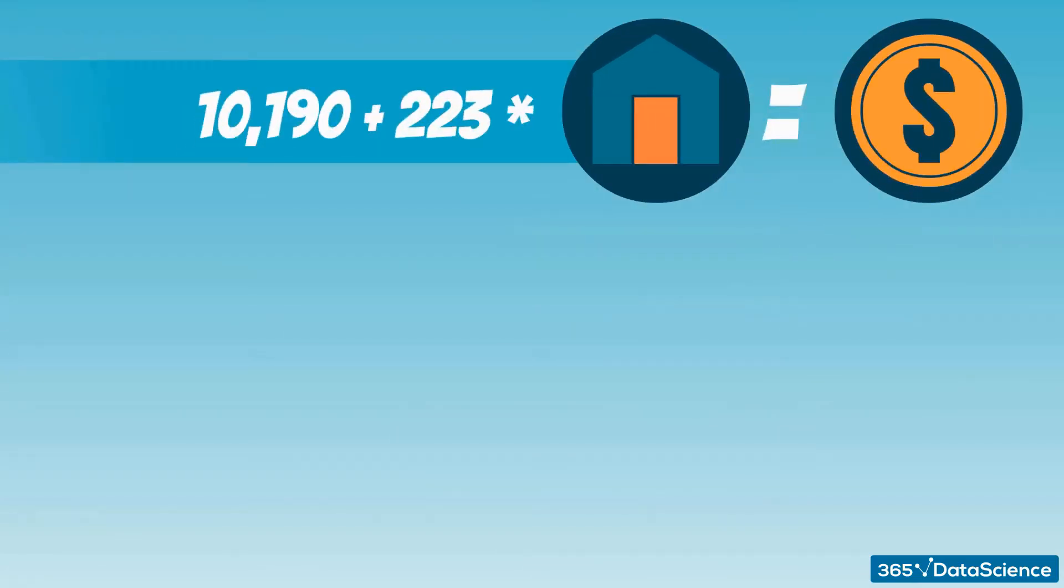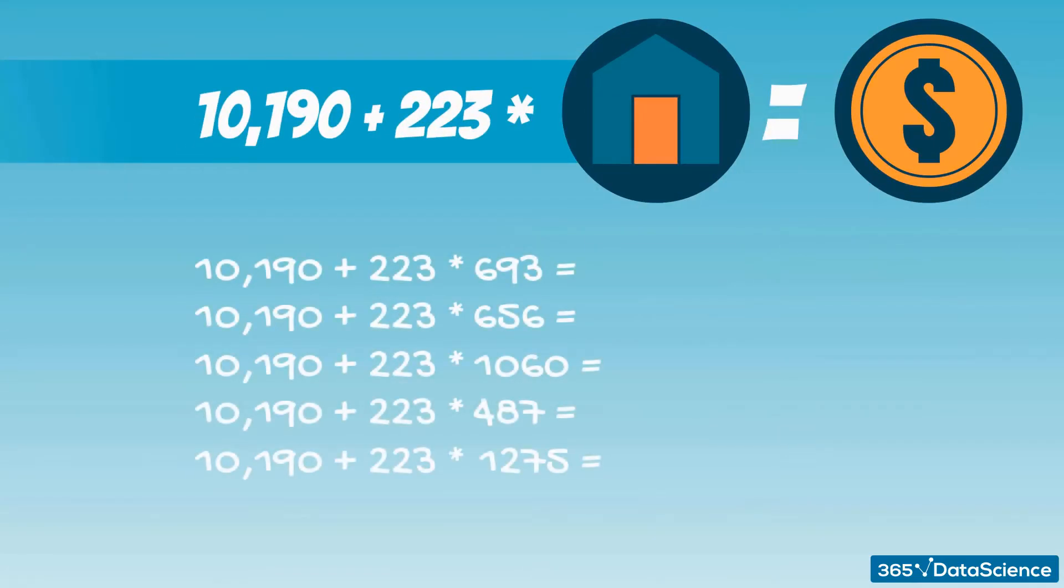Moreover, you know the sizes of five houses: 693, 656, 1,060, 487, and 1,275 square feet. What you want to do is plug in each size in the equation and find the price of each house, right?